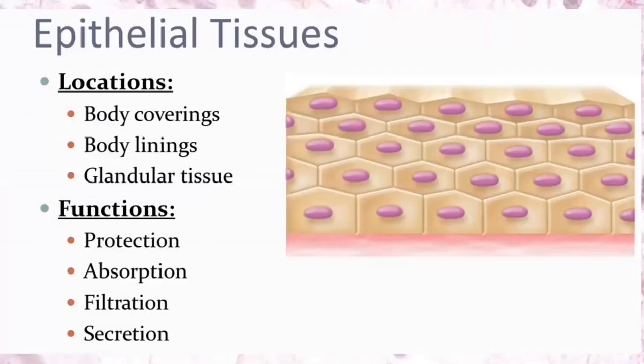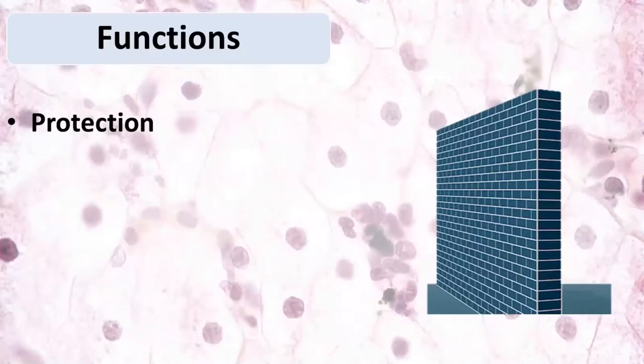Epithelial tissues are located in the body coverings and body linings, and also in glandular tissues. Their main functions are protection, absorption, filtration, and secretion.